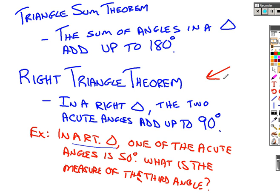We did a quick example then. If we have a right triangle, and we have another acute angle 50 degrees, what's the measure of the third angle? It's just going to be 90 minus 50, which is 40 degrees.